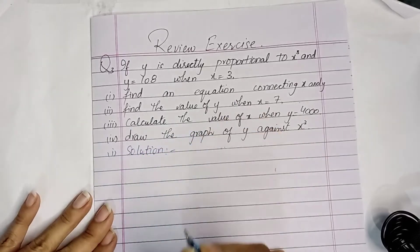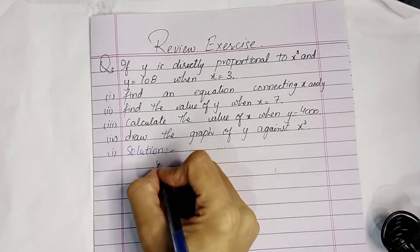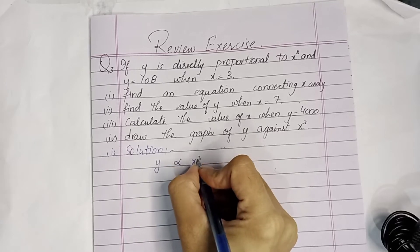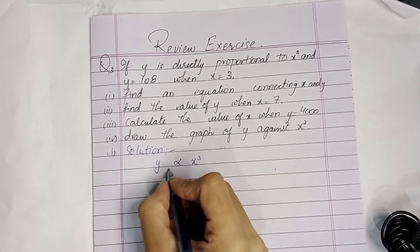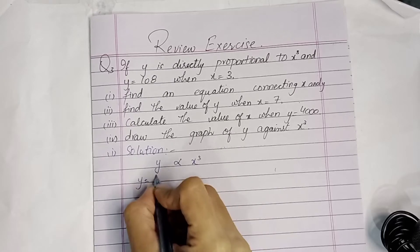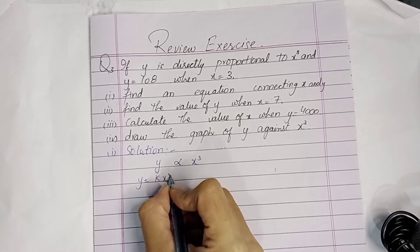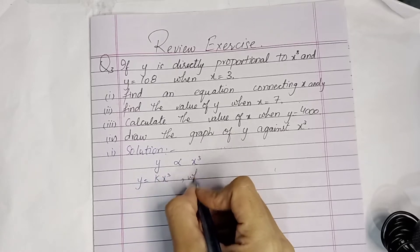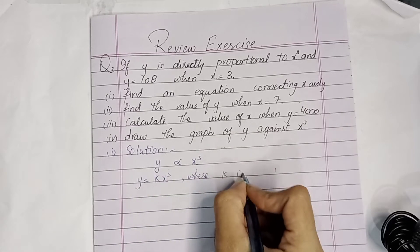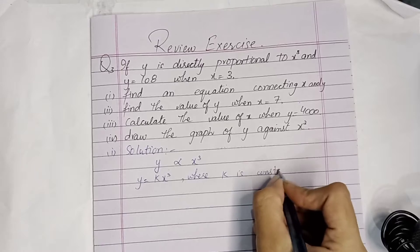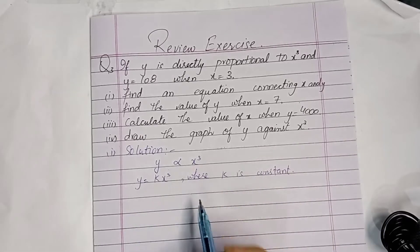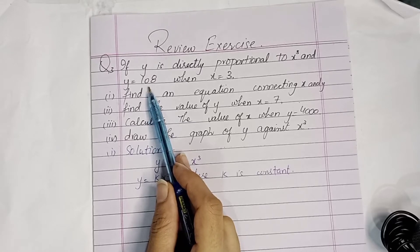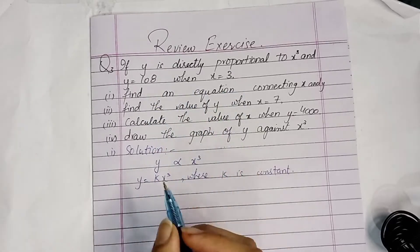Given that y is directly proportional to x cubed. When the proportionality sign is removed, the constant is k. Students, here we have two values: y is equal to 108 and x is equal to 3.